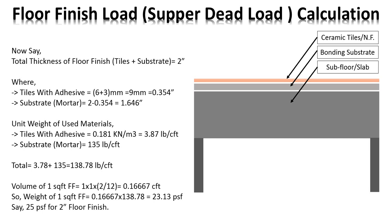When we input into our software, if we only use net finishing work it may be a 1-inch floor finish. If we consider 2 inches then we use 25 PSF. For a damp proof course, if the thickness is 3 or 4 inches, we multiply 12.5 by 3 to get 37.5 PSF, and so on. This is the way to find out floor finish load.